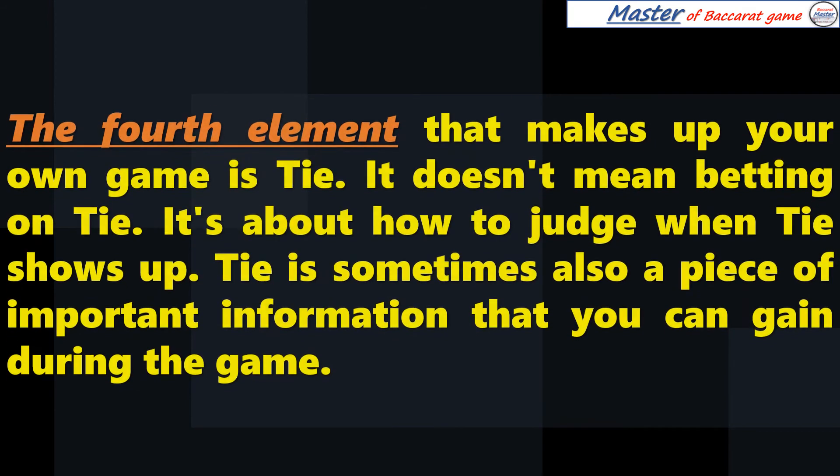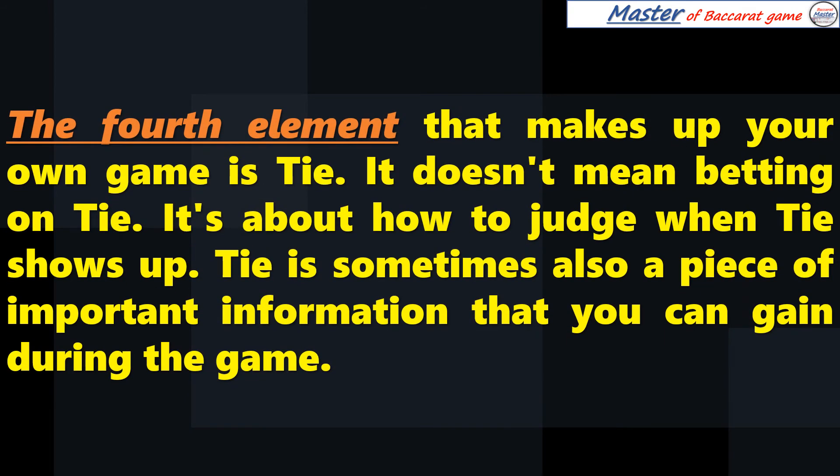The fourth element that makes up your own game is tie. It doesn't mean betting on tie. It's about how to judge when tie shows up. Tie is sometimes also a piece of important information that you can gain during the game.